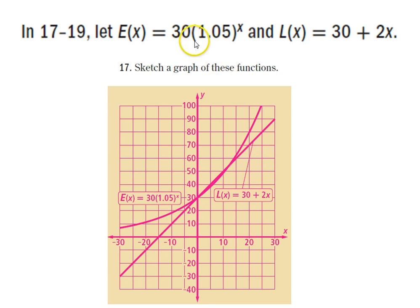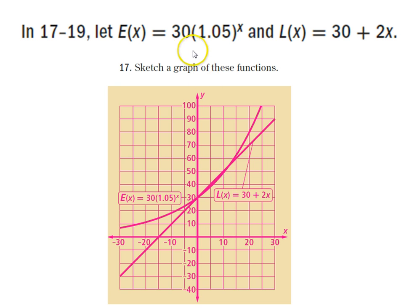For E of x, if we plug in 0 for x, we get out 30 — so both functions have a y-intercept of 30. If we plug in 10 into E of x, 30 times 1.05 to the 10th power comes out somewhere around 50 according to the graph. If we plug in 20, 30 times 1.05 to the 20th power gives us around 80 according to the graph.